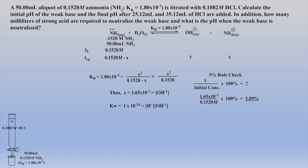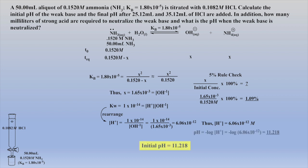Starting with our definition of Kw, followed by a rearrangement for the proton calculation, allows us to convert the hydroxide ion concentration to the proton concentration, which affords the initial pH of our solution. Note the log significant figure rule: when taking a log of a number with 3 sig figs, one must report 3 sig figs after the decimal point.